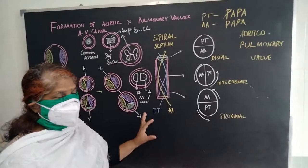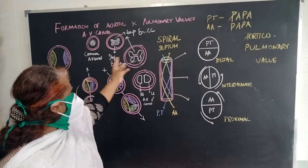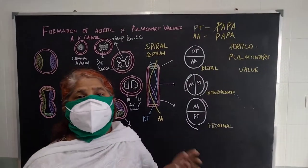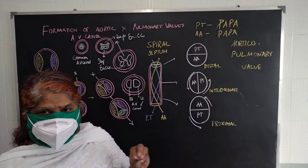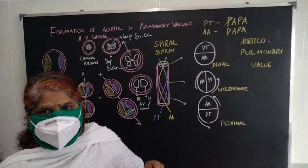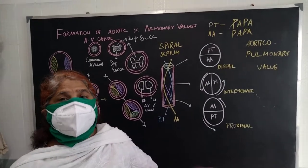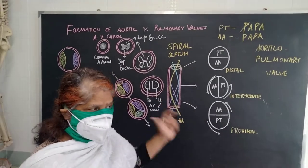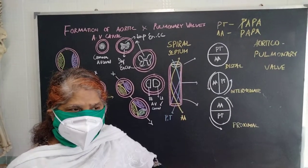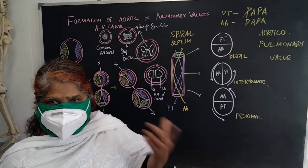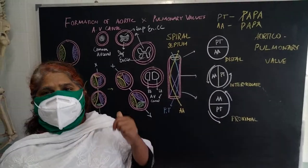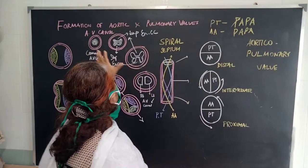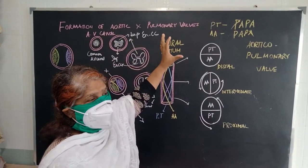All these curves are formed by neural crest cells — this is very important. Any valvular defect in a baby will also be accompanied by defects of the neural crest cells. This ends the valve formation of the aorta and pulmonary trunk.